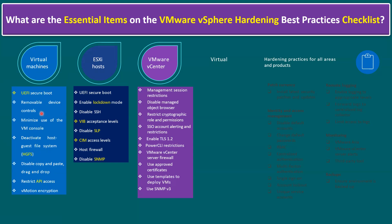And removable device controls — removable device controls means CD, DVD, and also unused devices like floppy drive. And minimize the use of VM console. In a production environment, it is not recommended. We always recommend connecting to Windows machines via Remote Desktop Connection and to Linux and Solaris via SSH session. And deactivate the Host-Guest Filesystem, HGFS. And disable copy and paste and drag-and-drop options for security reasons.